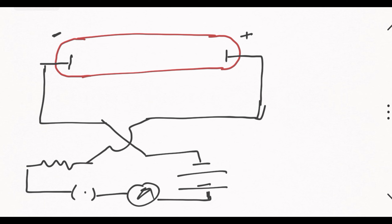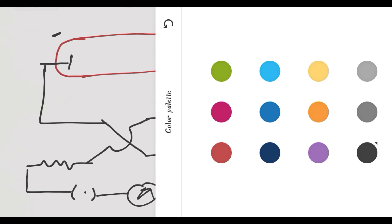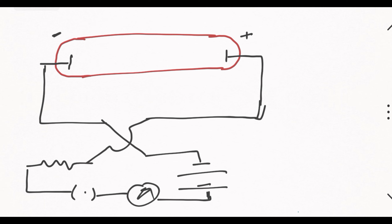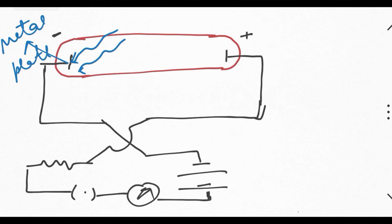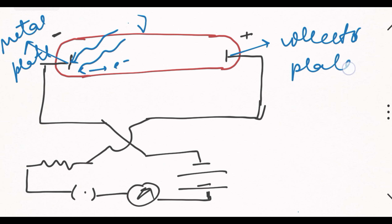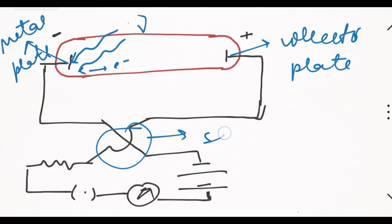So this is our experimental setup. Here we will put a photon incident on the metal plate. When we put a photon incident on this plate, electrons will start to emit from there. We call this the collector plate. There is also a sign changer, whose function we will discuss shortly. First, let's understand what the photoelectric effect is.